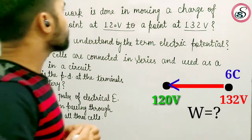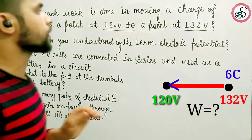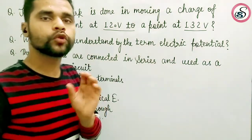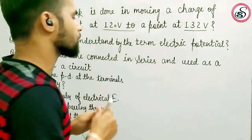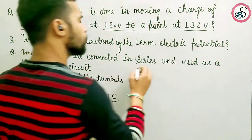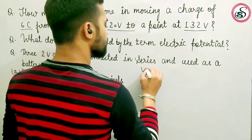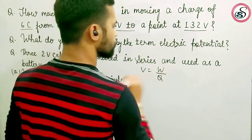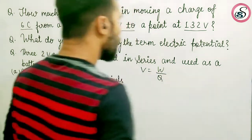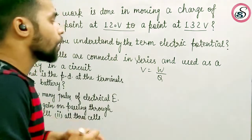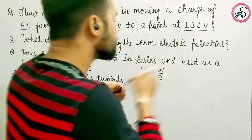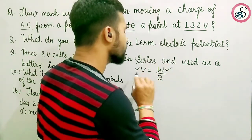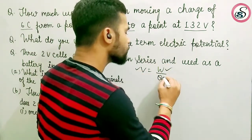Now we have to calculate the work done using the simple formula for electric potential. The formula is V is equal to W upon Q.